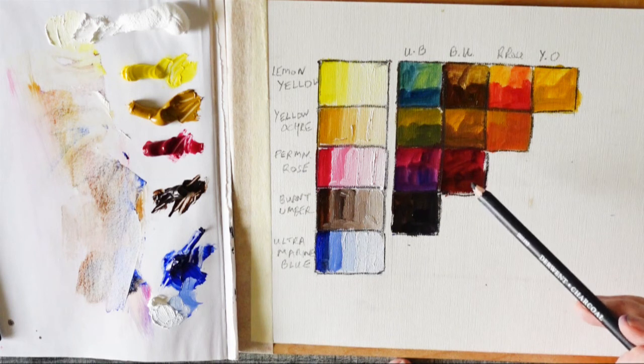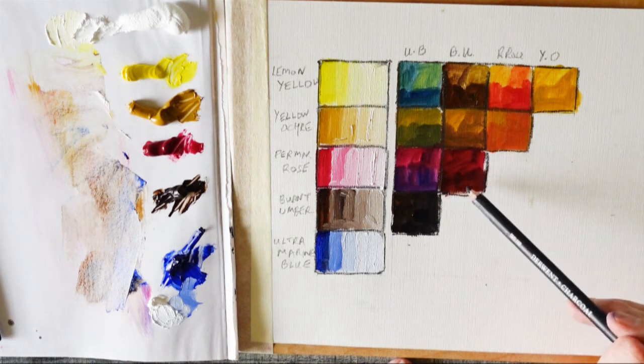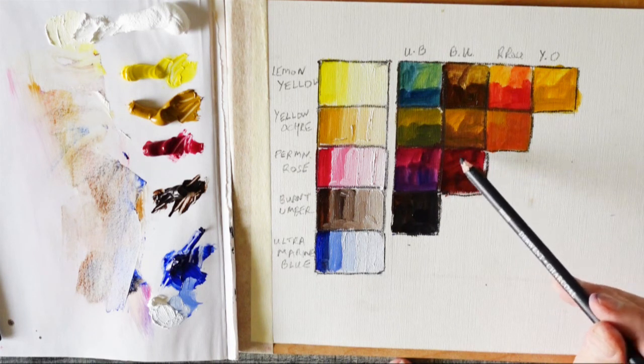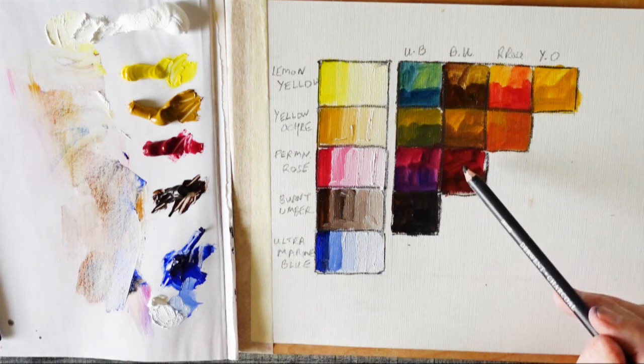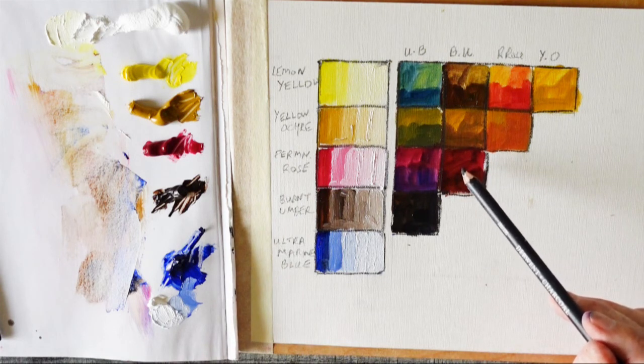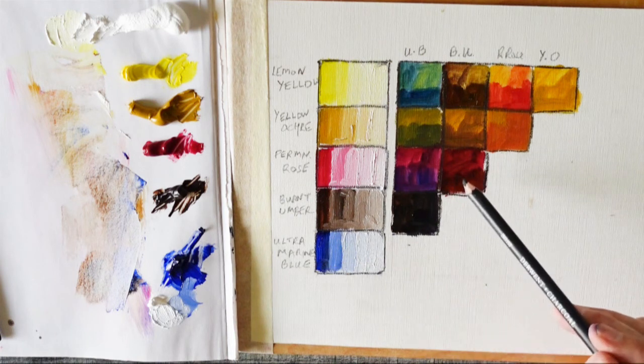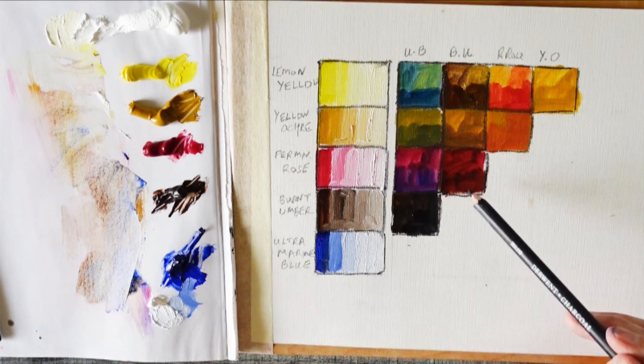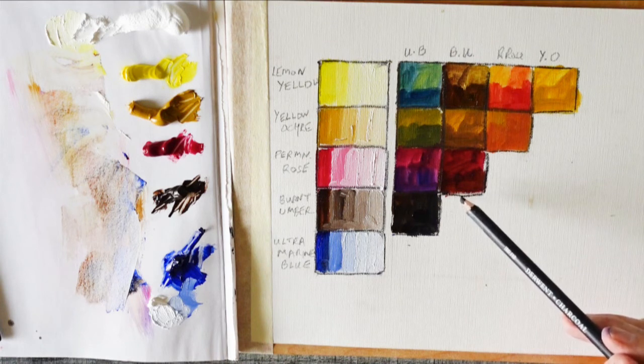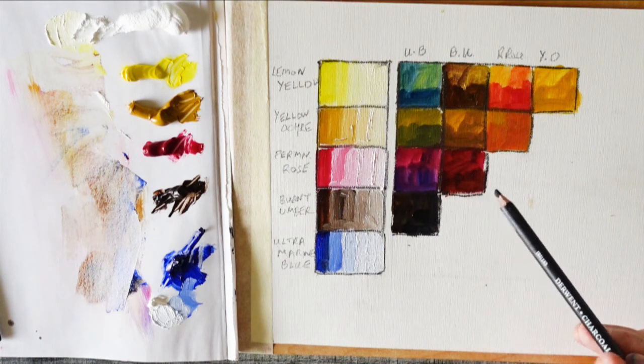For example, permanent rose and burnt umber make a beautiful color, absolutely lovely luminous shadows that glow. So if you're tempted to add blue to that, ultramarine blue, it'll turn to a muddy opaque color, almost like black. Not so useful for our painting.